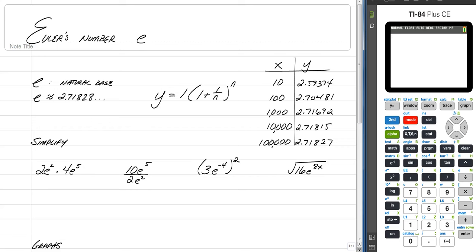So, e represents the natural base, and its value is 2.718... Kind of like pi. It's a number that just keeps on going.